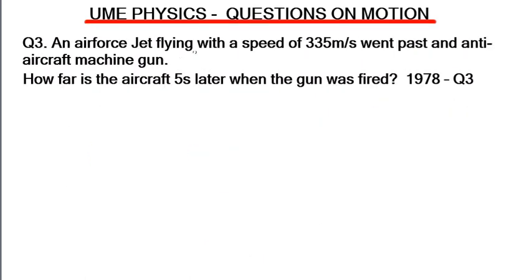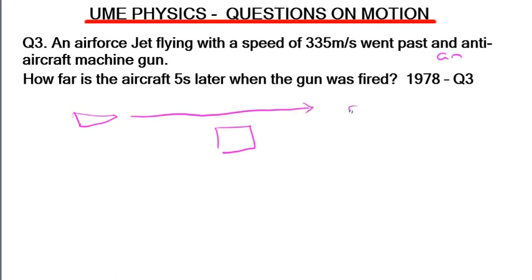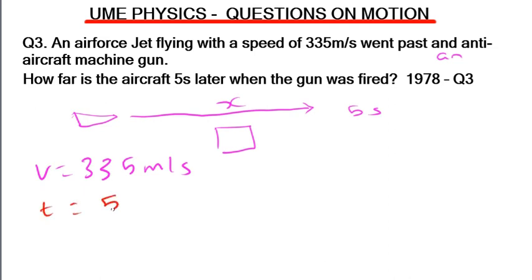Question three: an air force jet flying with a speed of 385 m/s went past an anti-aircraft machine gun. How far is the aircraft five seconds later when the gun was fired? Assume the jet flew past the machine gun — we are asked to calculate how far it has moved five seconds later. The velocity is 385 m/s and the time is 5 seconds.